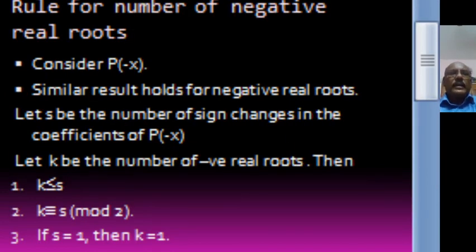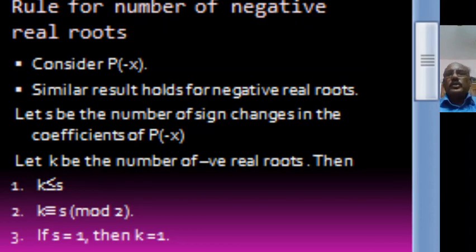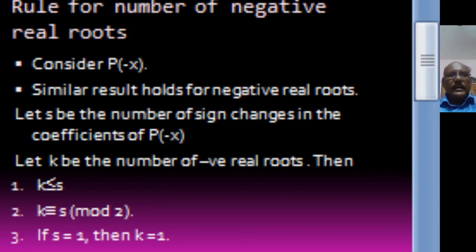Now what is the rule for the number of negative real roots? To find the number of negative real roots of the polynomial, we consider P of minus X, and we use the similar technique as used for P of X. Let S be the number of sign changes in the coefficients of P of minus X. Suppose K is the number of negative real roots. Then Descartes' rule states that K is less than or equal to S and K is congruent to S modulo 2. If S equals 1, then K equals 1, because K is less than or equal to 1 and K is congruent to 1 modulo 2 implies K equals 1.